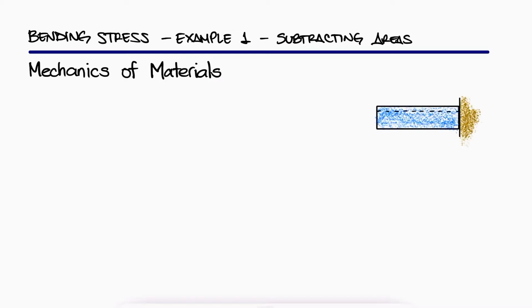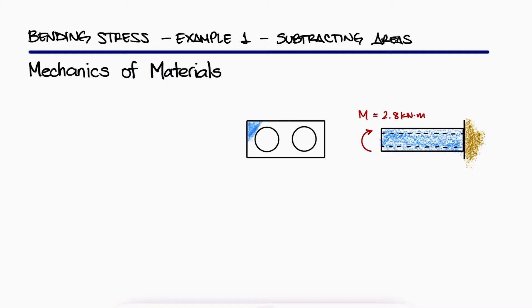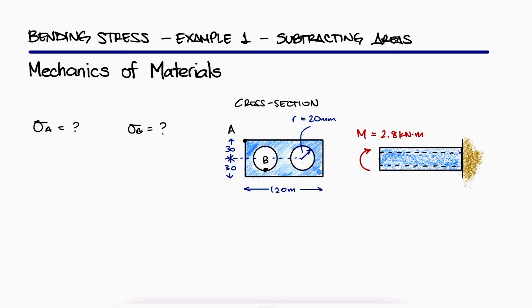Knowing that the couple shown acts in the vertical plane, what is the stress at point A and point B? This is the first example for the bending stress main video. The links to the other examples in that main video are in the description below.